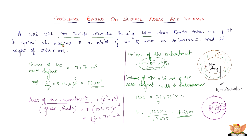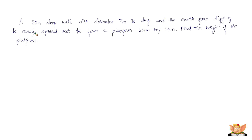Let's quickly solve another similar well-based problem. A 20 meter deep well with diameter 7 meters is dug, and the earth from the digging is evenly spread out to form a platform 22 meters by 14 meters. Find the height of the platform. The platform is cuboid-shaped, so its volume is length times breadth times height. The same quantity of earth dug out is used to make the platform, so we just equate the volumes.